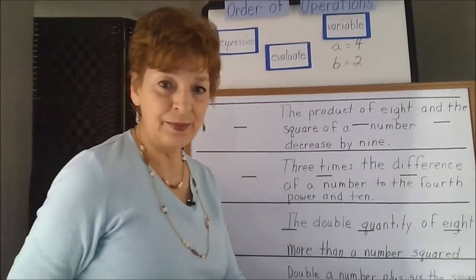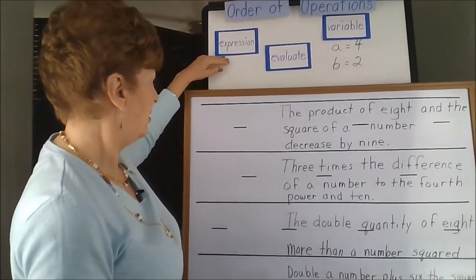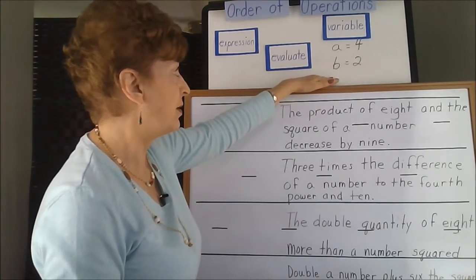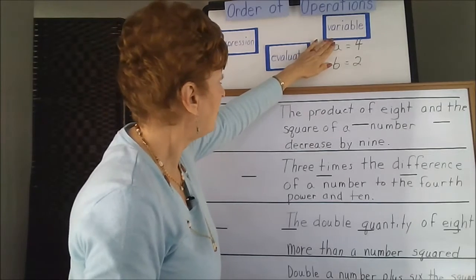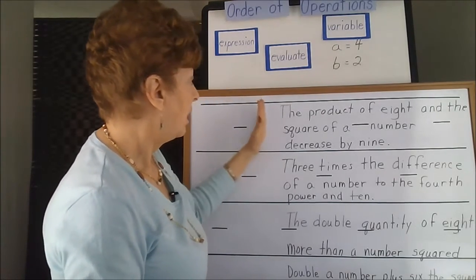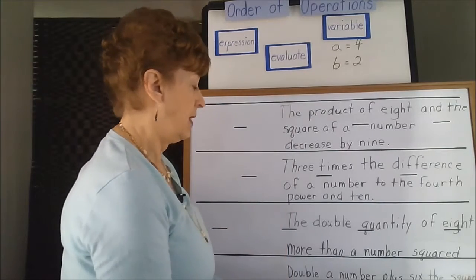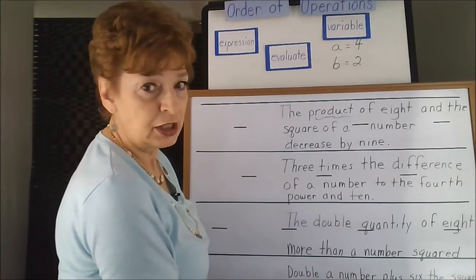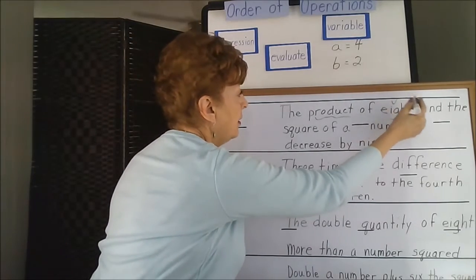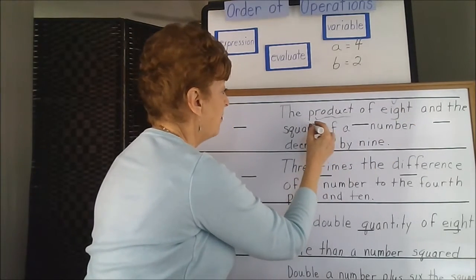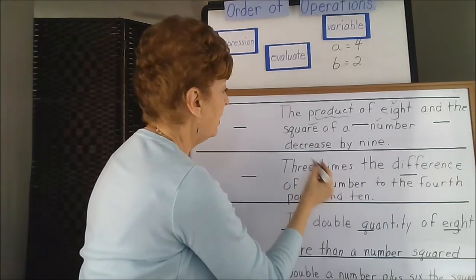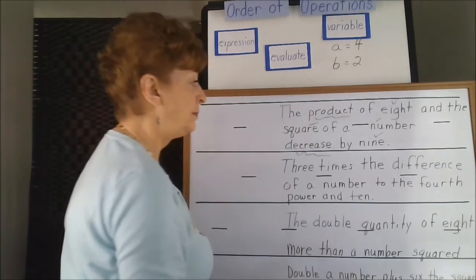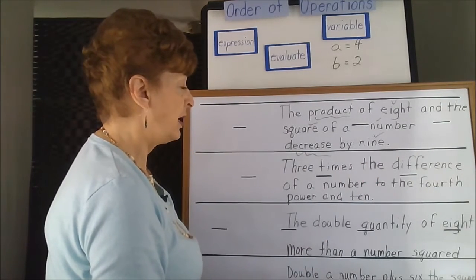Here are a few more examples of making expressions and then evaluating them with variables. The product of 8 — so here we have an operation clue, a number — and the square of a number, so we've got a number there, decreased — here's an operation clue — by 9. There's a lot going on in this particular problem.